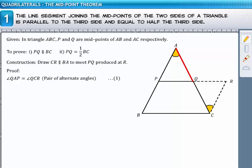Also, AQ is equal to QC since Q is the midpoint of side AC. Also, angle AQP is equal to angle CQR, since they form a pair of vertically opposite angles.